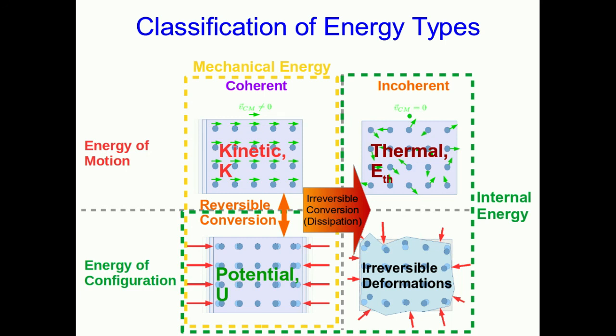There's just one more type of energy we'll meet, and it's called source energy. It's an incoherent energy, and somewhat confusingly it straddles the line between an energy of motion and an energy of configuration. We'll talk about it in the next lecture.